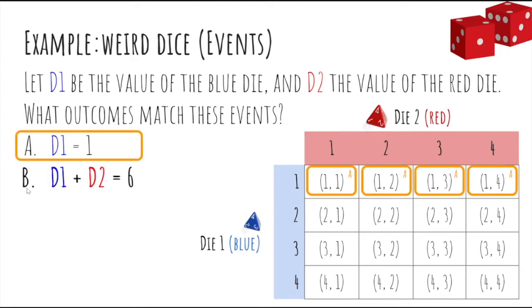What about event B, that the sum of the two die is 6? Well, you can see that 4 plus 2 is 6, 3 plus 3 is 6, or 2 plus 4 is 6, so those three outcomes correspond to event B.